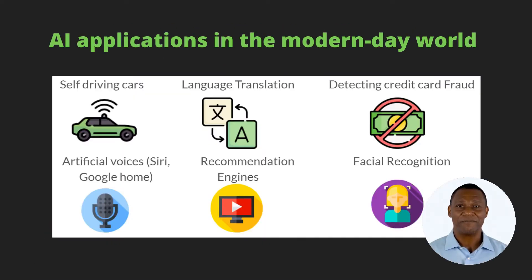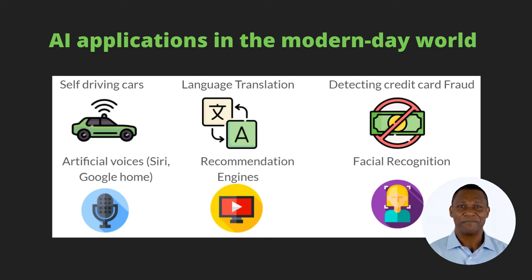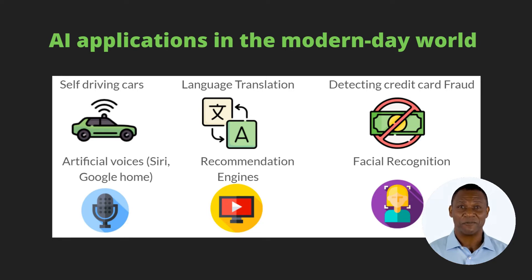In the modern-day world, we see a lot of AI applications around us. One of the applications is self-driving cars. You have on-demand cab services like Uber, Lyft, etc., that take us from destination A to destination B. In countries across the world, there is significant research going on where an AI system will use cameras and different sensors to navigate on the road and take us from destination A to destination B without a human cab driver. These are self-driving cars.